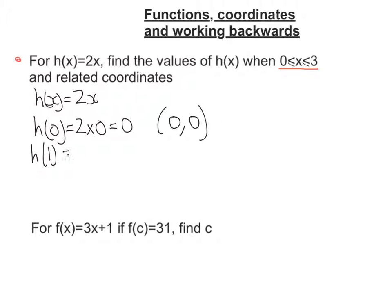For h(1), I replace the x's with 1, so 2 times 1 is 2. I put 1 in and get 2 out, so that's the coordinate (1,2). h(2) is going to be 2 times 2, so I get 4. I put 2 in and get 4 out, giving the coordinate (2,4).